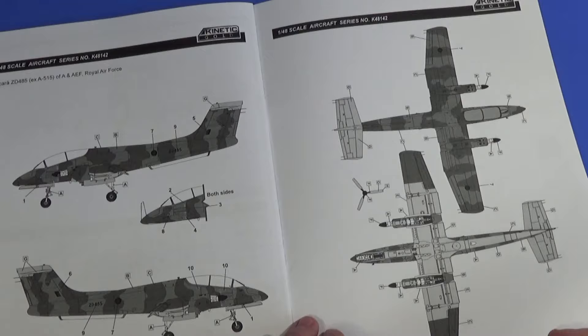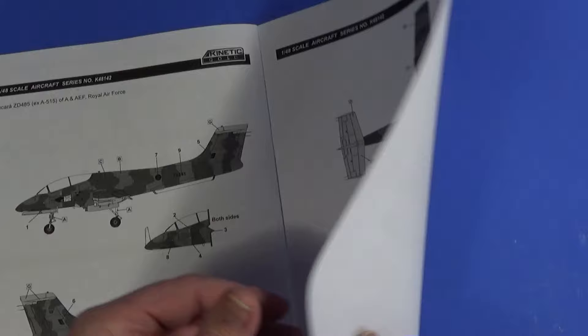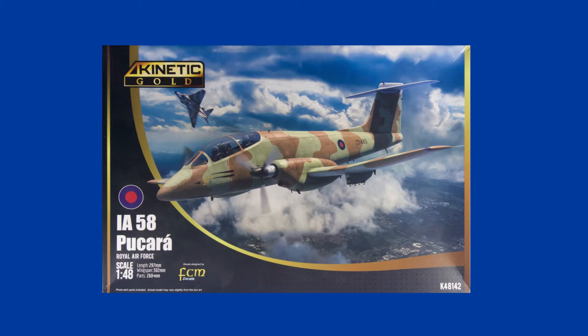And then the scheme layout. This is where some color would be really useful, but no. All the color callouts are down here for what you get, the single scheme in the kit. So that's the instruction manual.